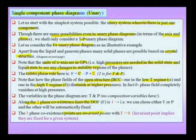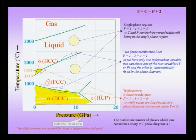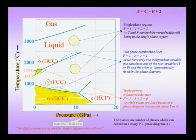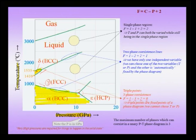All three-phase coexistence points are invariants of the phase diagram. At these triple points, if you calculate the degrees of freedom: F equals 1 component minus 3 phases plus 2 for temperature and pressure, giving a net of 0. That means this is an invariant of the phase diagram — the place where the gamma form, the alpha form, and the epsilon form coexist is a fixed, invariant point.